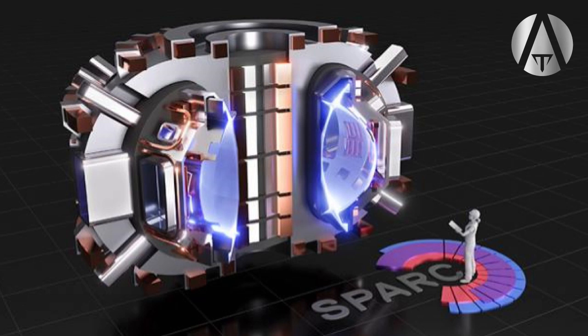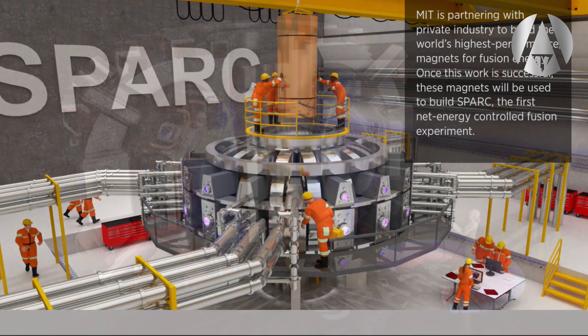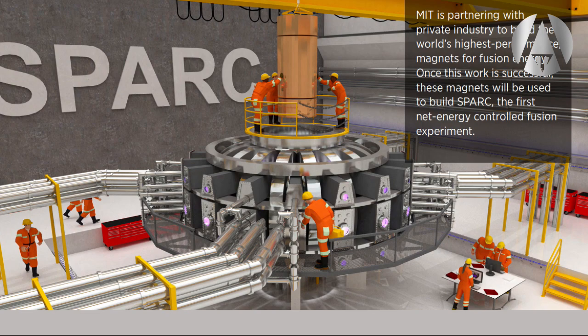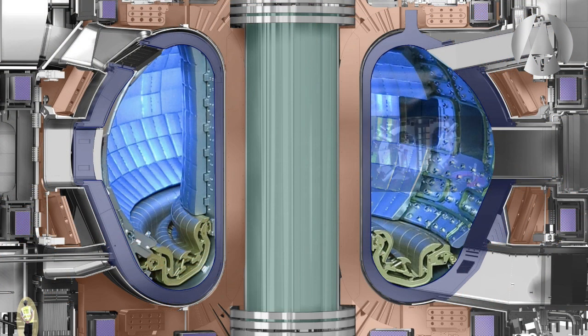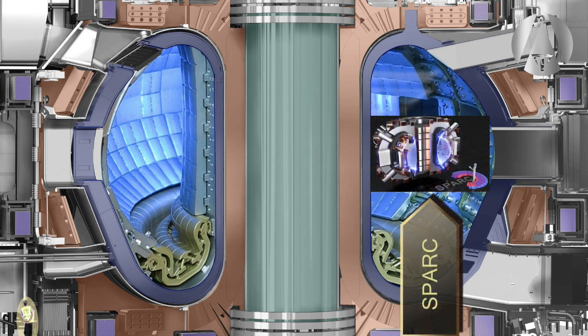In fact doubling the strength of your magnetic field allows you to cut the size in half and reduce the volume by a factor of eight. Compare the ITER fusion reactor using old superconductor designs with the SPARC reactor using the new technology.